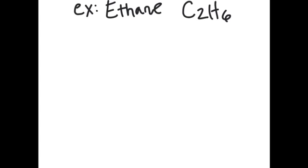So first, let's try an example: ethane, whose formula is C2H6. Since there are two carbons, I know that at each point there will also be a carbon. So I draw two dots and then connect them. And that would be the skeletal structure for ethane.